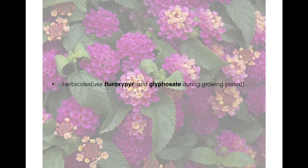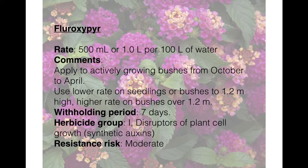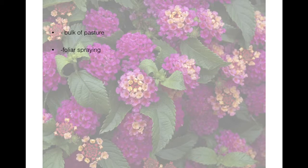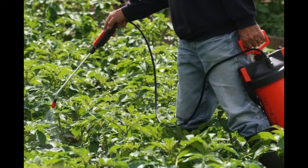Herbicides are cost-effective for smaller infestations and for treating regrowth. Fluroxypyr and glyphosate are used during the growing period. Allowing bulk pasture to remain in the paddock all year round under normal weather conditions helps prevent weed establishment. For spring treatment, it is only effective if Lantana is actively growing and plants are less than 2 metres high.